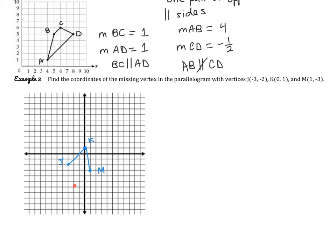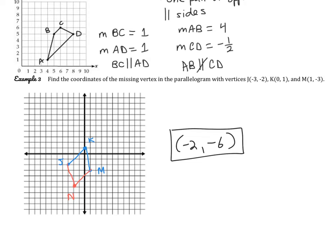To double-check, we find the slope of KM: going down 4 over 1, so it's negative 4. From the new point to the previous one, it's also down 4 over 1, confirming the slope matches. So this last coordinate — let's call it N — is at negative 2, negative 6. We're not just matching the slope; we're making the same amount of movement, so we also have congruent opposite sides.